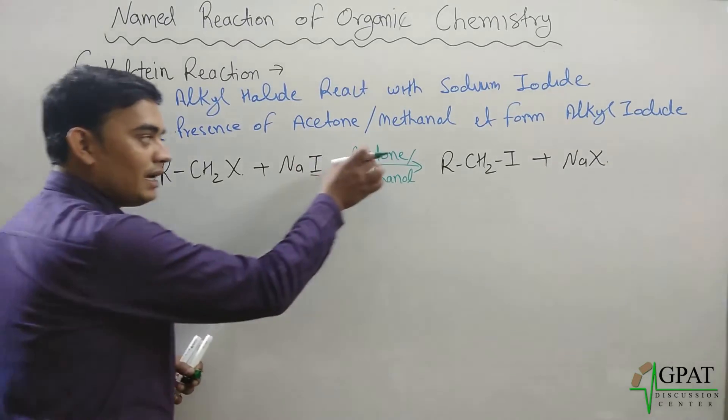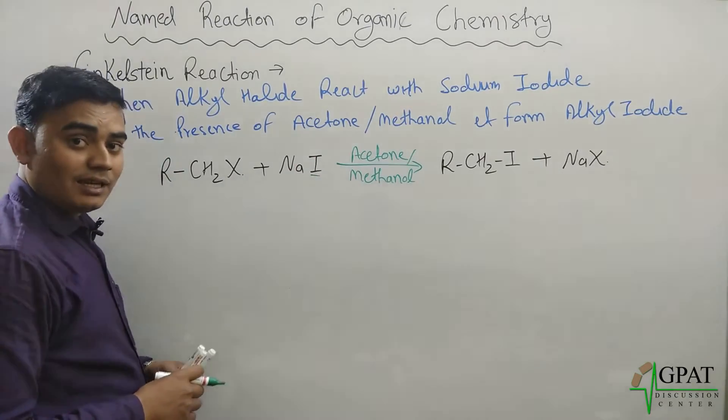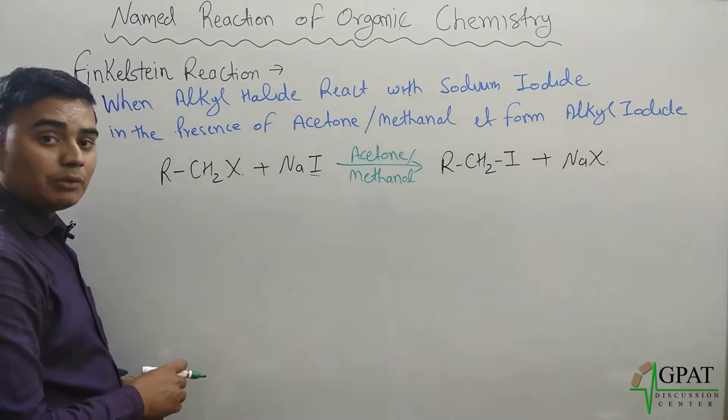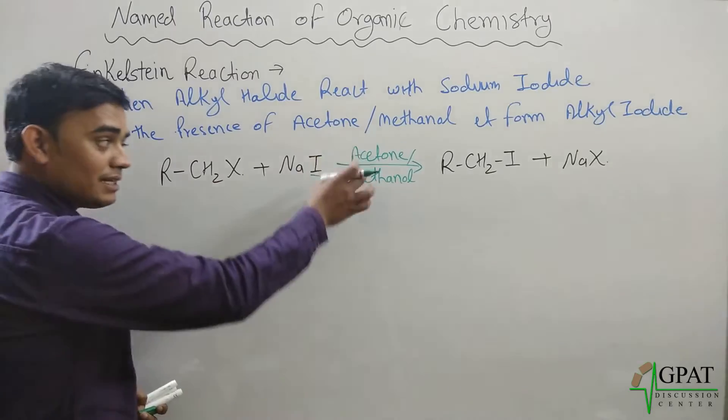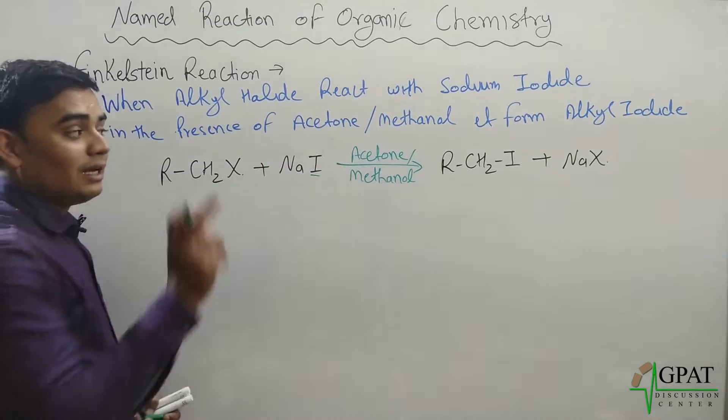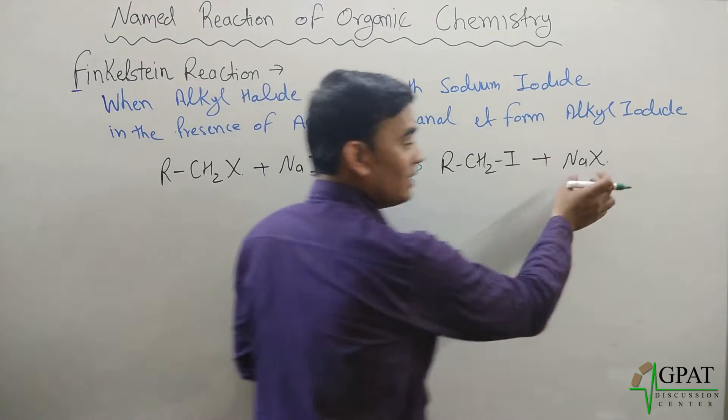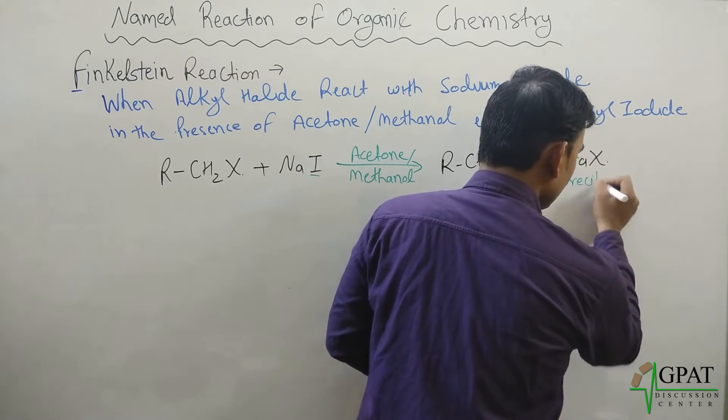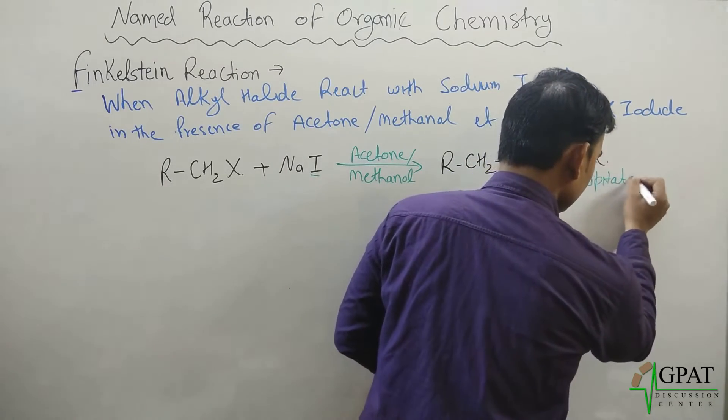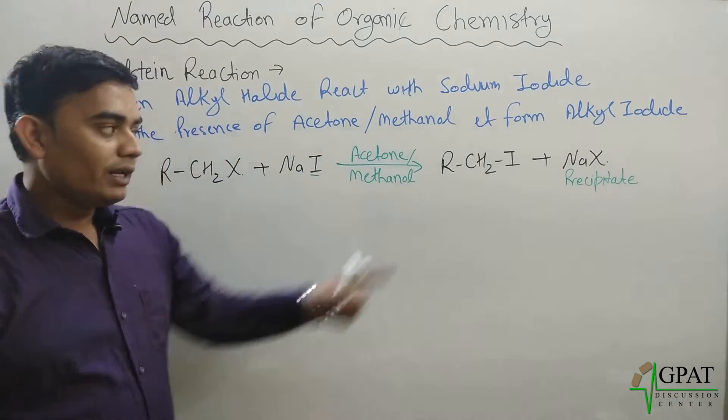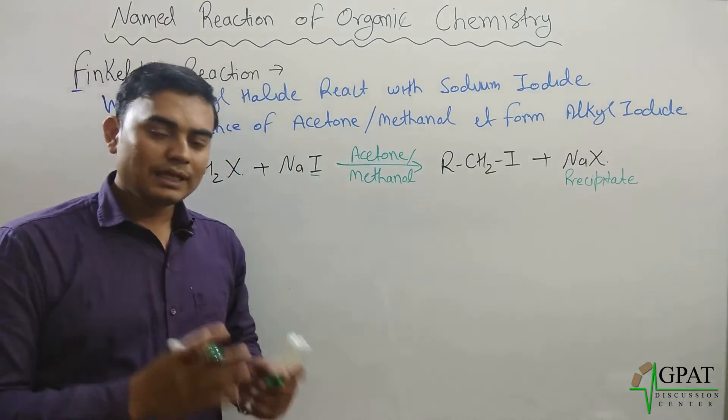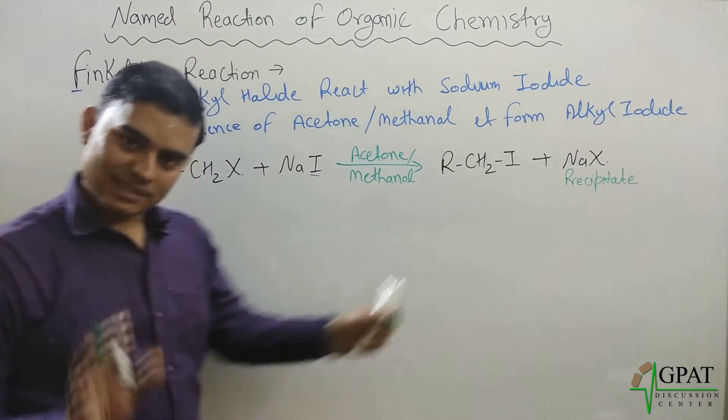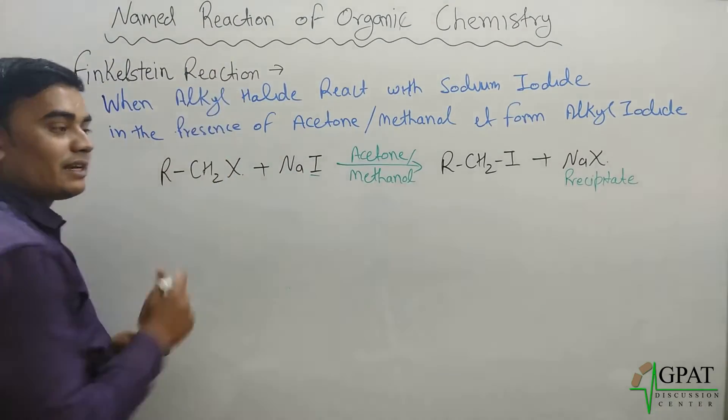So how can this reaction be done? Here, acetone helps in the cleaving of, breaking of this alkyl halide bond, as well as this acetone or methanol helps in the formation of this sodium halide precipitate. When this precipitate forms, then the removal of this precipitate can be easy. That's why this reaction can take place.